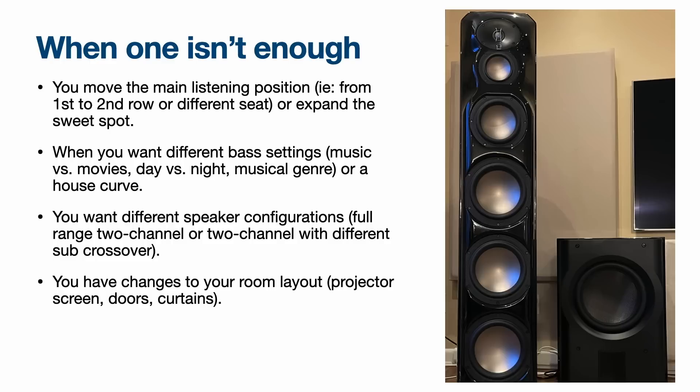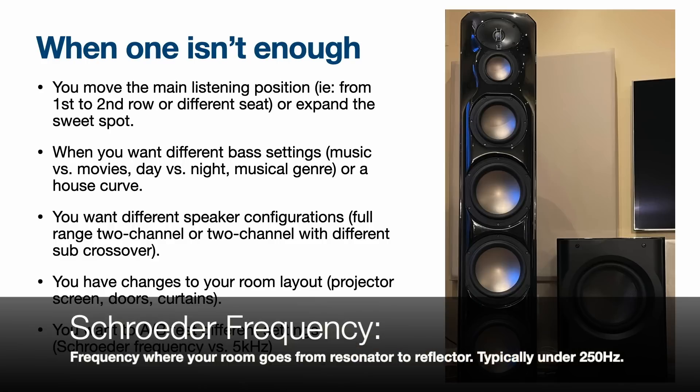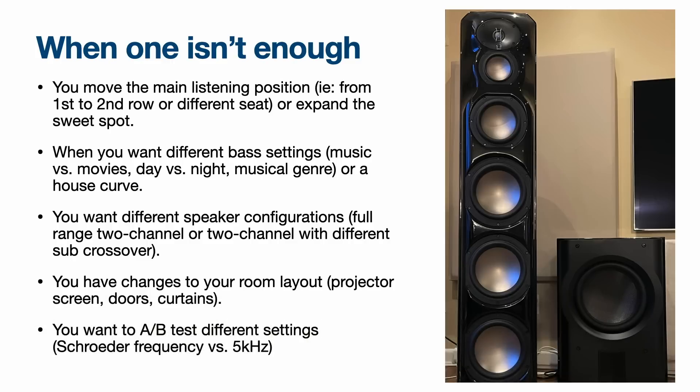You might also have changes to the room layout — maybe you have a projector screen and an up-or-down situation that alters the acoustics. Doors open versus closed, curtains drawn. Or you just want to A/B test different settings — for example, limiting calibration to the Schroeder frequency, or capping it at 5 kHz as opposed to all the way up to 20 kHz.